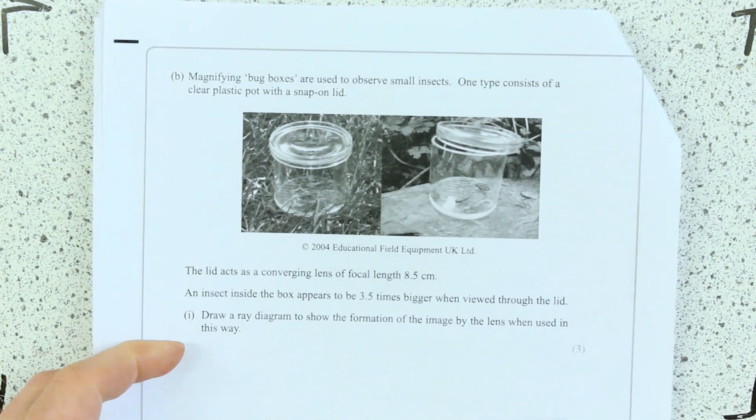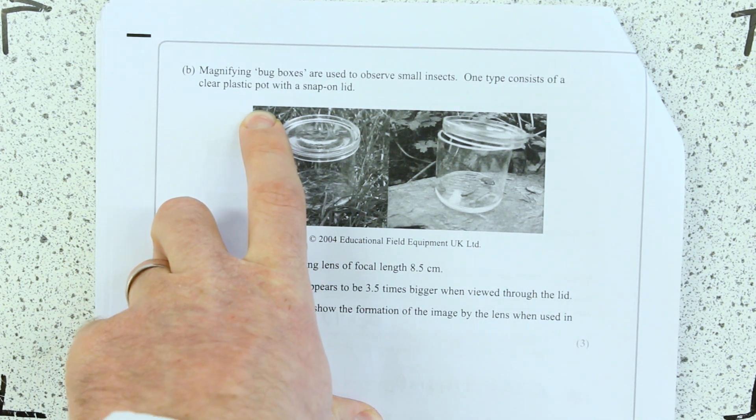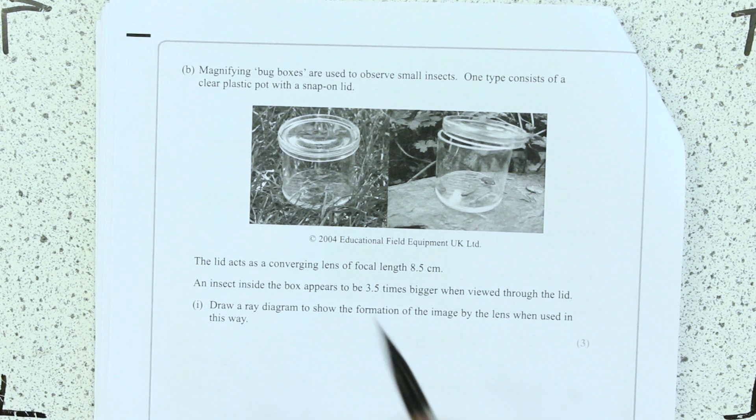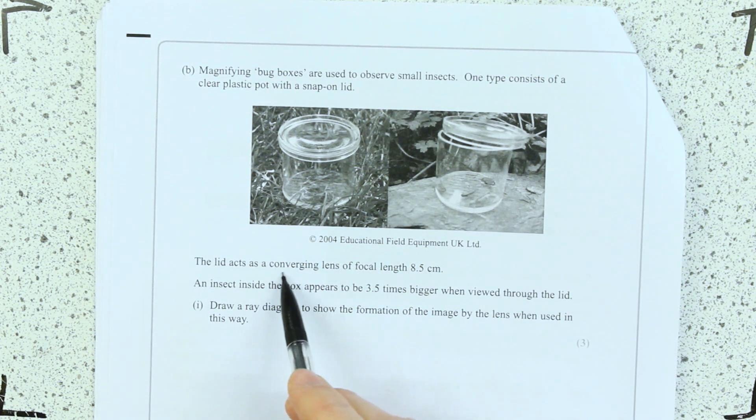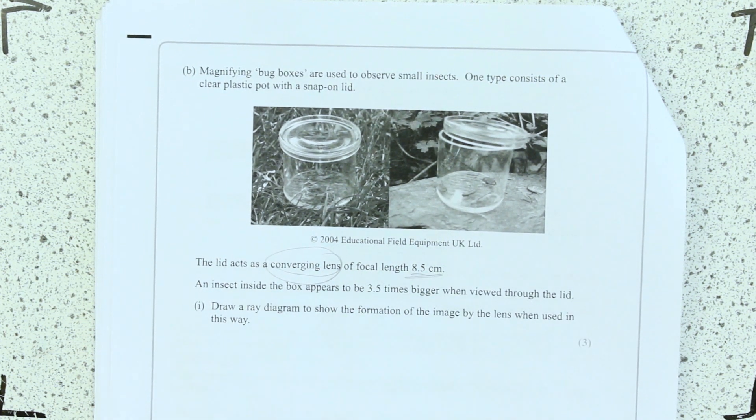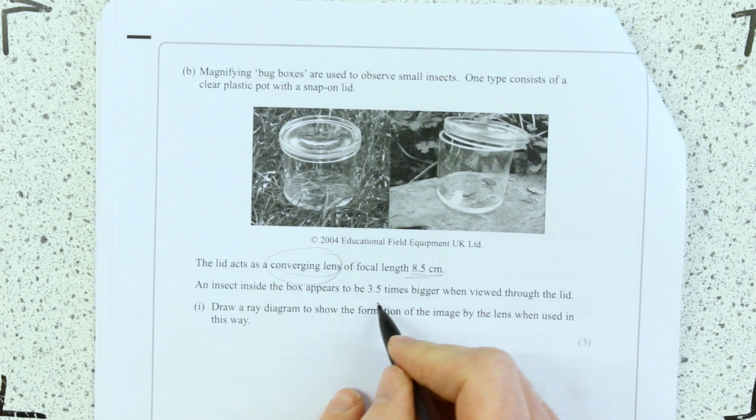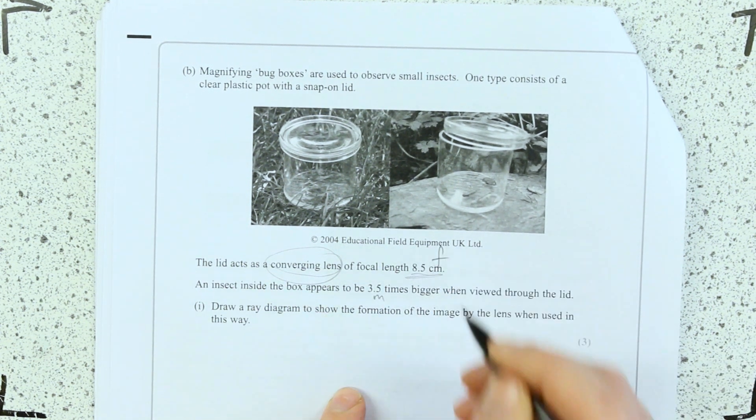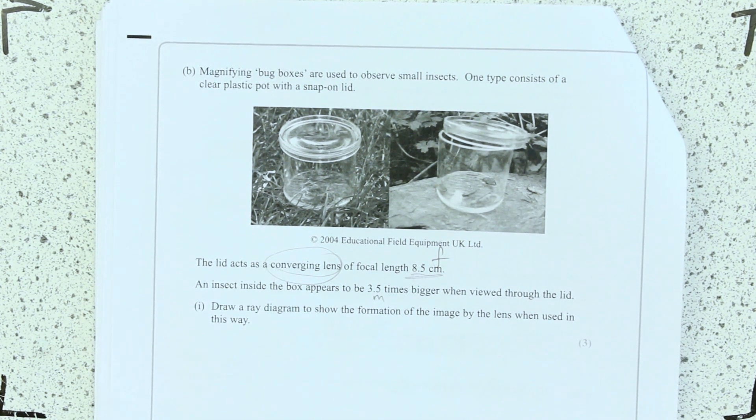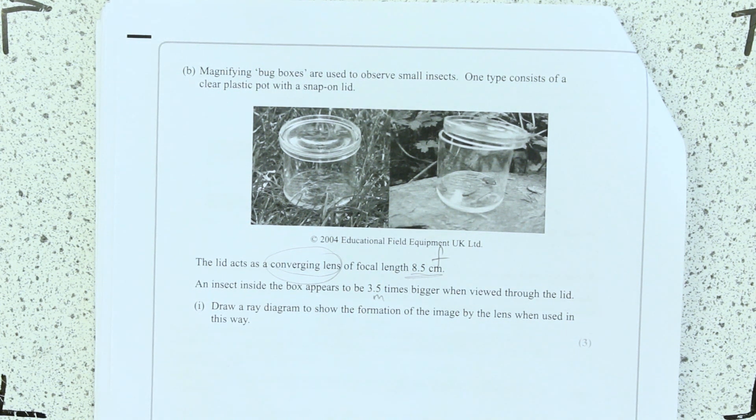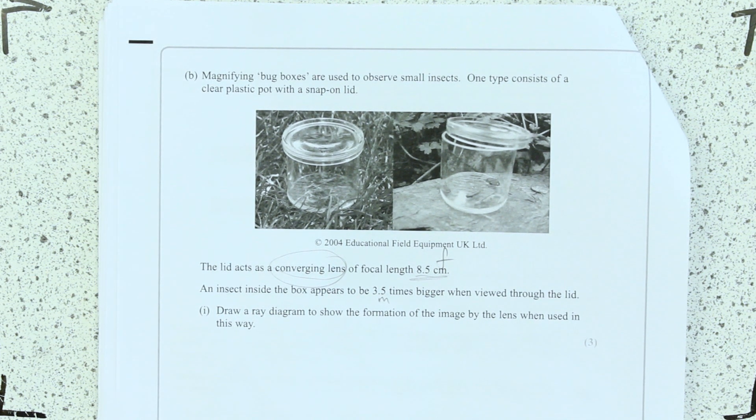Part b asks you to draw a ray diagram. So let's have a little look. Magnifying bug boxes are used to observe small insects. One type consists of a clear plastic pot with a snap-on lid. So it's a magnifying glass, essentially. The lid acts as a converging lens of focal length 8.5. An insect inside the box appears to be 3.5 times bigger, so that's the magnification. And that's the focal length when viewed through the lid. Draw a ray diagram to show the formation of the image by the lens when it's used in this way. I'll just get my ruler. So I think to get this right, you've got to recognize that it's been used as a magnifying glass.